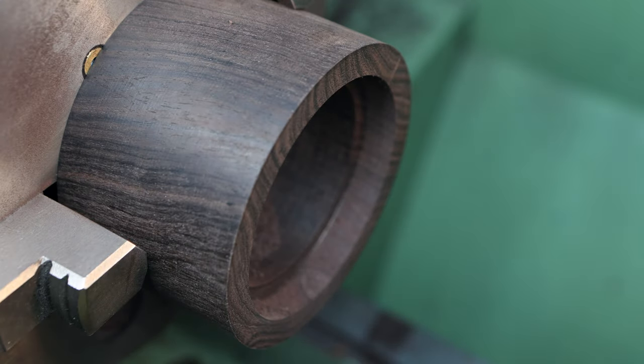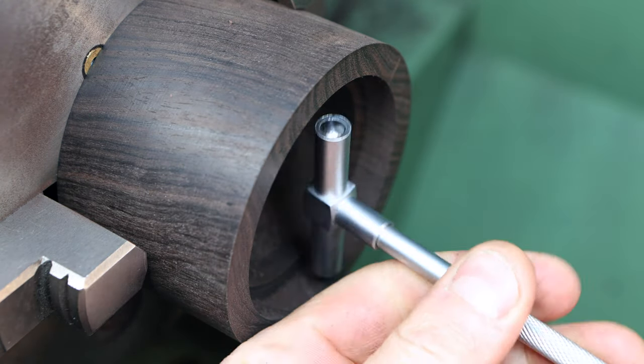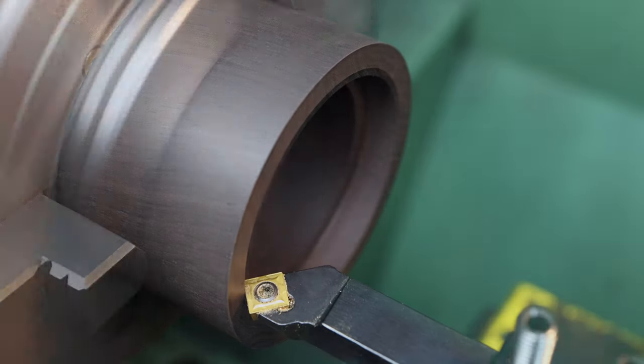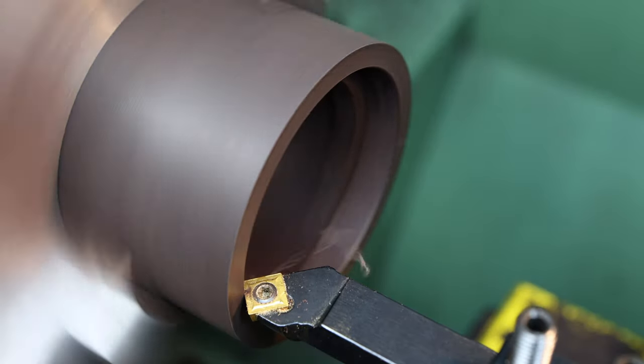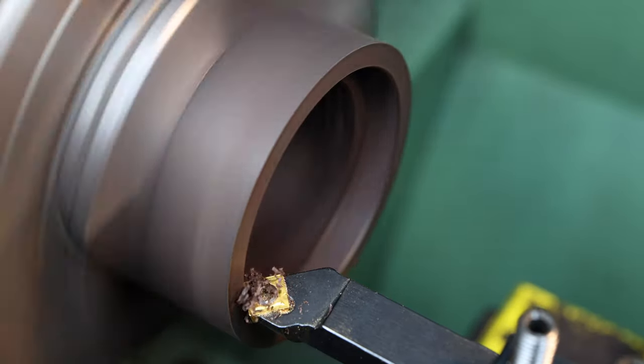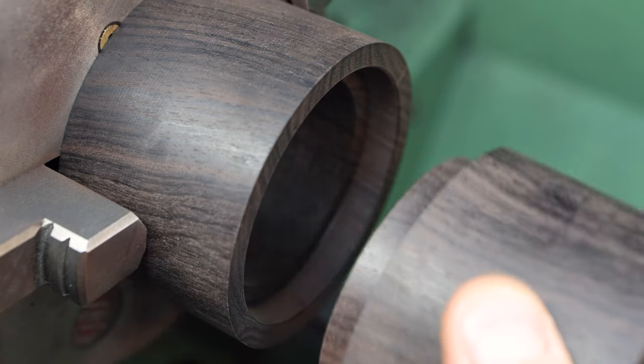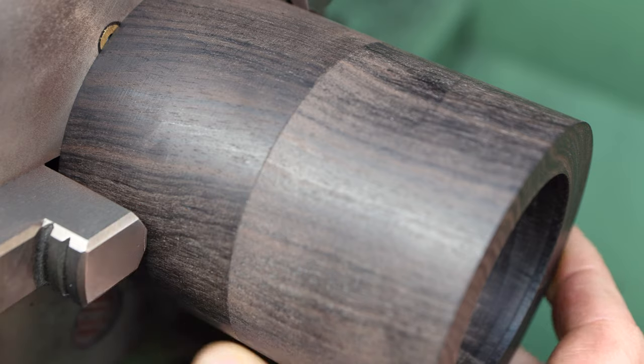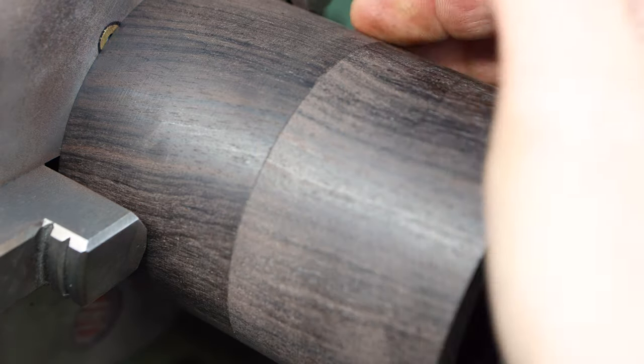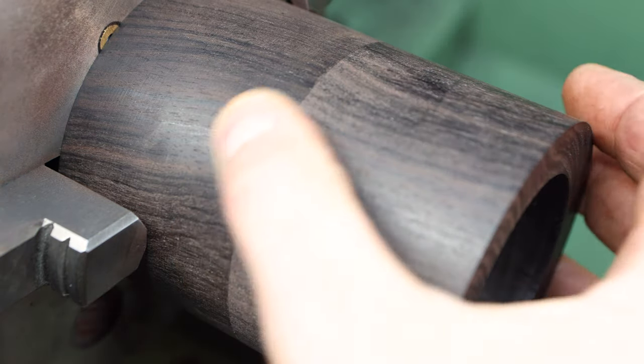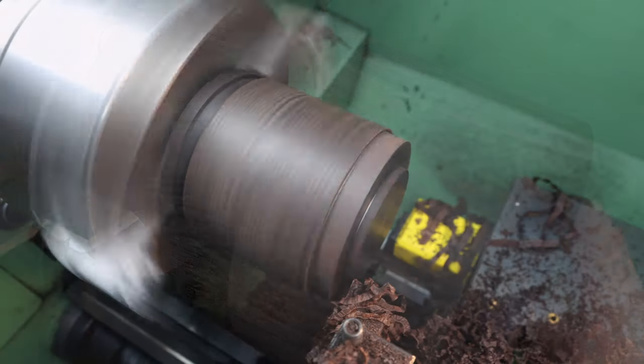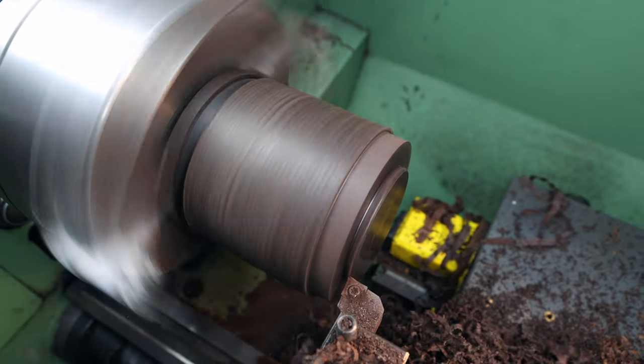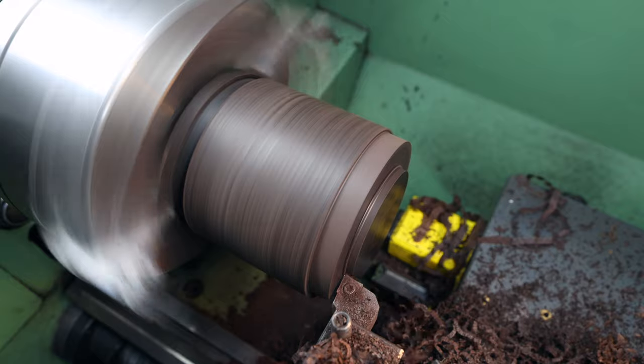I'm periodically checking the diameter of that recess with the bore gauges to make sure that we don't overshoot it and now we're getting close I'm going to just chamfer the edge before we do a test fit. And that is just the fit I'm looking for. It's tight enough that it doesn't wobble around but loose enough that the parts can slide together quite easily. And now we move on to machining the end caps for the base and the top.